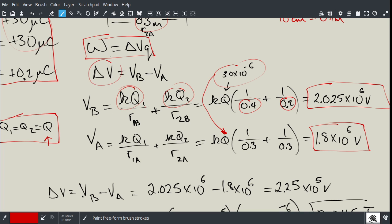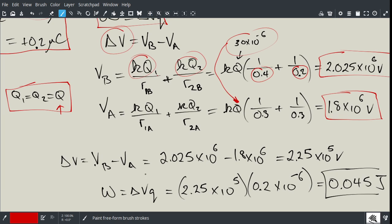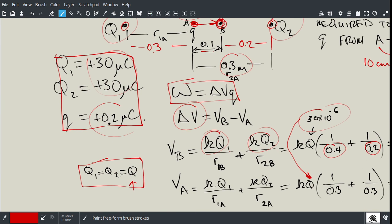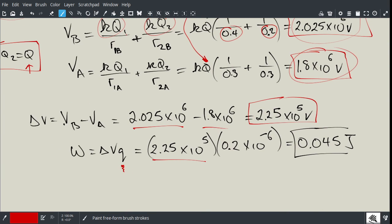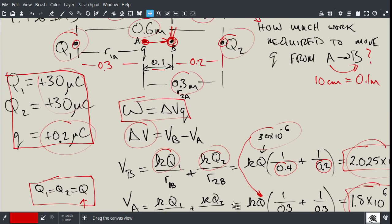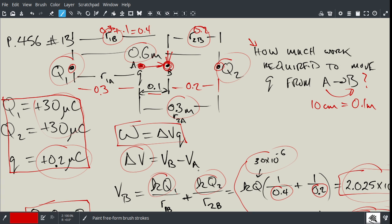Now all I need to do is calculate delta V. I need to subtract these two values, and I do that. This was 2.025 times 10 to the 6, and 1.8 was this one. I subtract them, and this is my delta V: 2.25 times 10 to the 5. Now I can plug this value into my original equation and multiply by the small q, which was given in the problem as 0.2 microcoulombs. I plug that in and multiply it, and I get the answer of 0.045 joules, which is the correct answer in the solution key. That was the solution to number 13 on page 456.